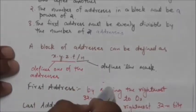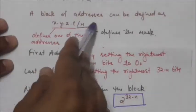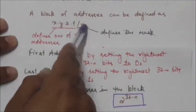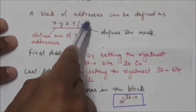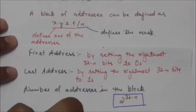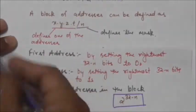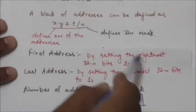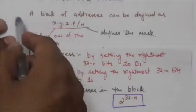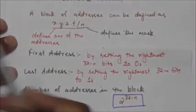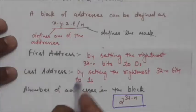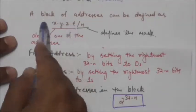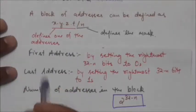The /n part defines the mask. If a block of addresses is defined in the form x.y.z.t/n, then the first address in the block can be found by setting the rightmost 32 minus n bits of this address to zeros.